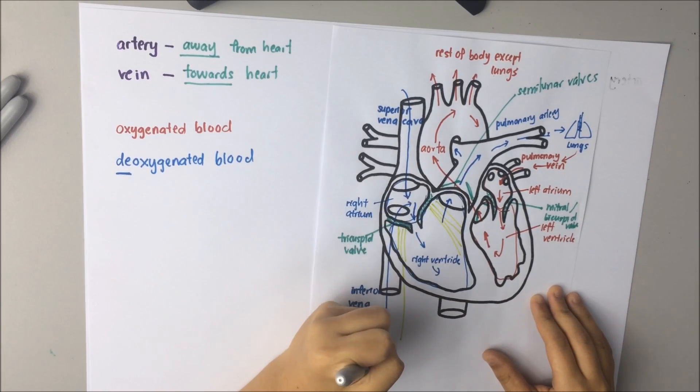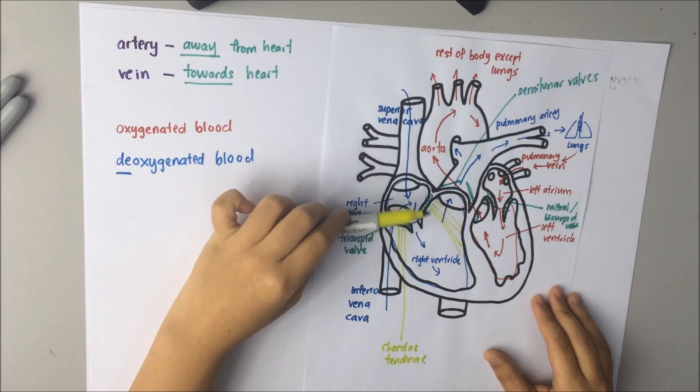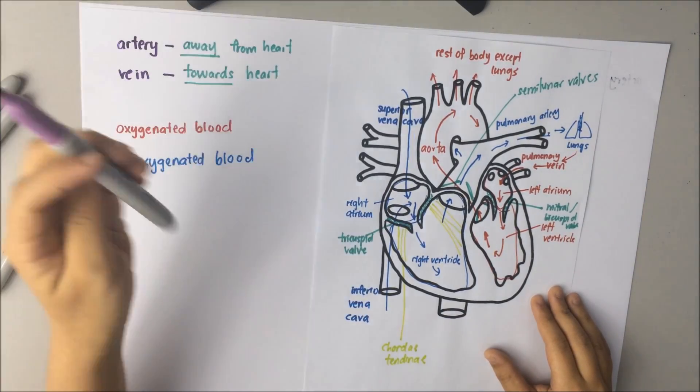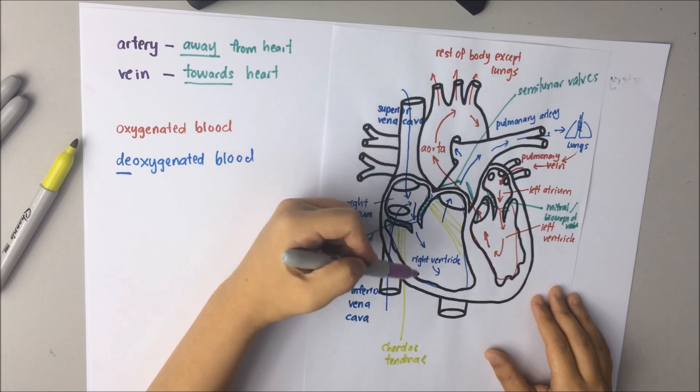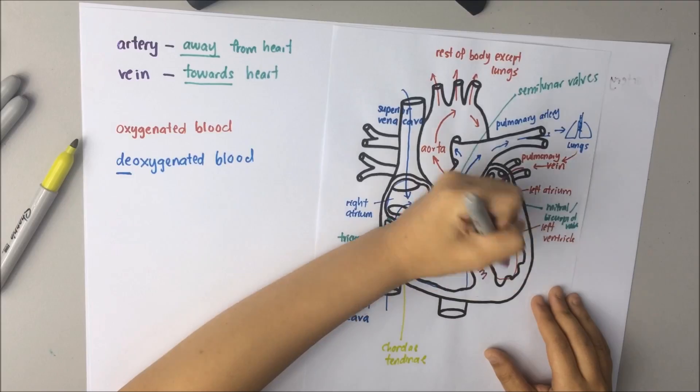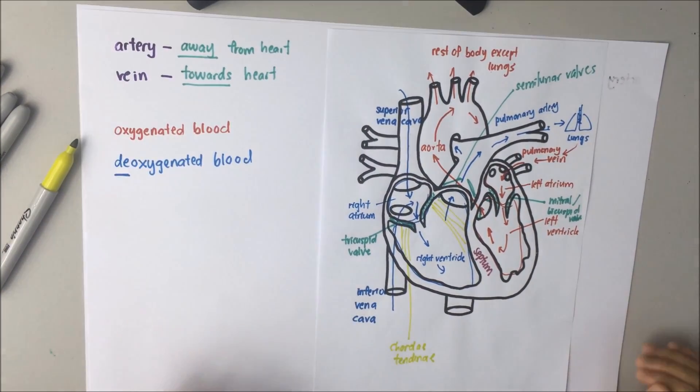Chorda tendineae are like strings connecting the valves to the wall of the heart. This is to prevent the valve from flapping backwards. The chambers are also separated by septum in the middle. This is to prevent the mixing of the oxygenated blood and the deoxygenated blood.